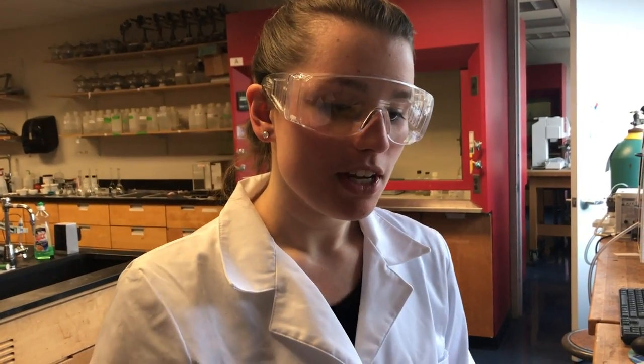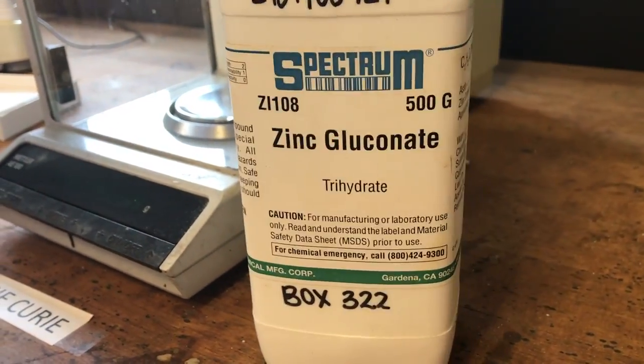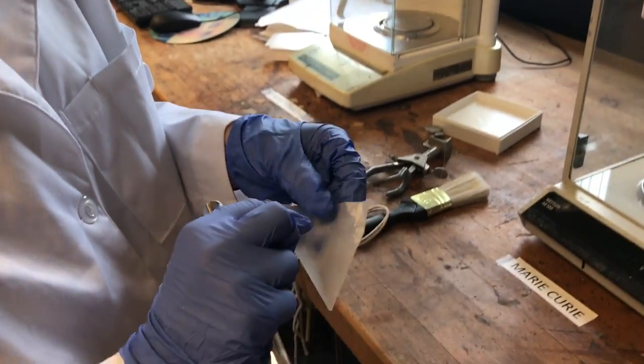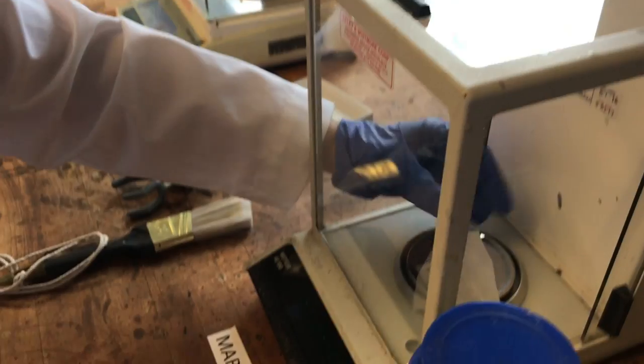Next we're going to show you how to prepare sample number two, which includes weighing out 0.1 grams of the zinc gluconate. In order to do this, you're going to want to fold the weighing paper and then tear it.